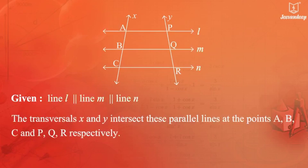The transversals X and Y intersect these parallel lines at the points A, B, C and P, Q, R respectively.